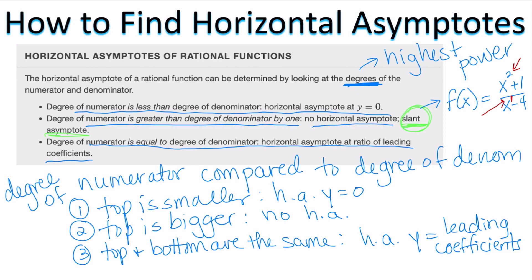If instead f(x) equals x cubed plus seven over x minus six, the degree of the numerator is three and the degree of the denominator is one. The top is bigger, but the top is not bigger by exactly one — the difference between the two degrees is two. Therefore, there is no horizontal asymptote and there is no slant asymptote.